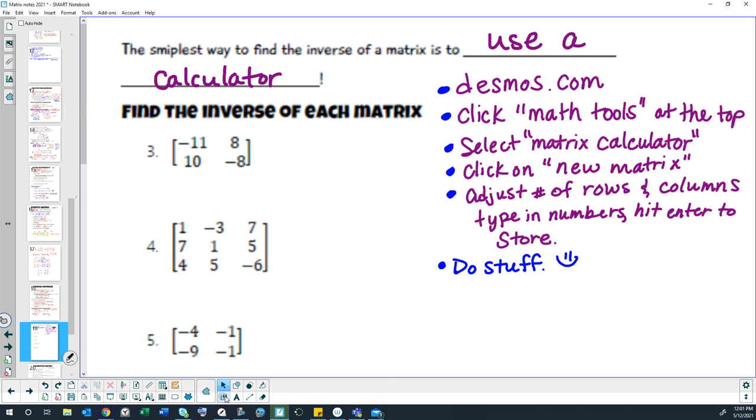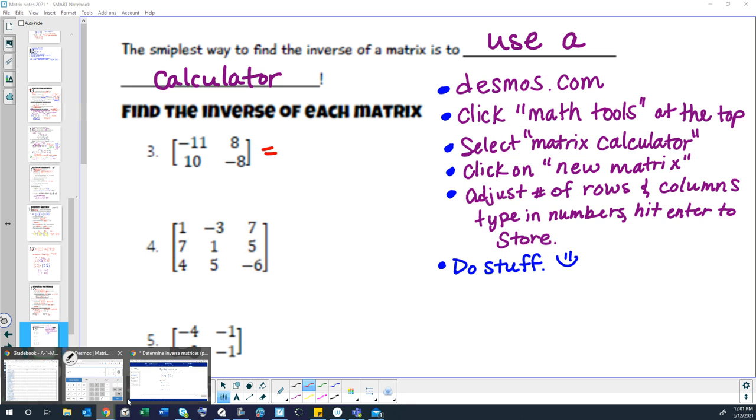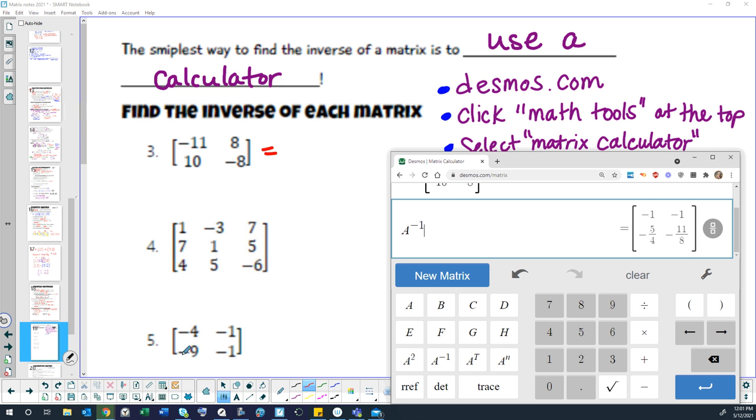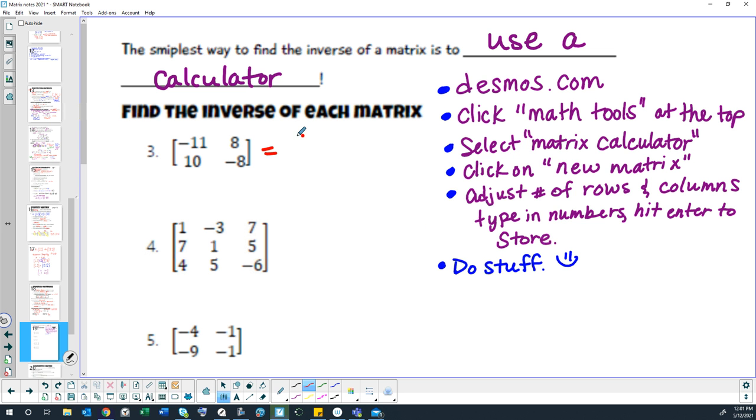Now I need a pen to write down my answer. My one window disappears every time I start to write, so I've just got to remember it: negative 1, negative 1, negative 5/4, negative 11/8. So negative 1, negative 1, negative 5/4, negative 11/8.